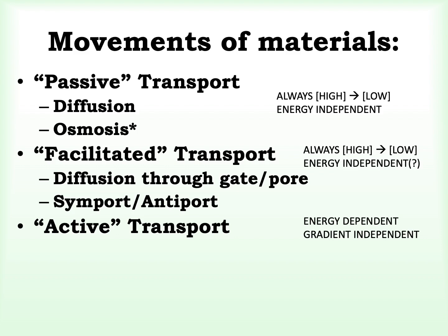The last type is active transportation, which is energy dependent and gradient independent. In active transport, movement can be from low to high or high to low concentration, but energy must be expended to move. This energy comes from the conversion of ATP into ADP and phosphate. That conversion releases energy which the cell uses to power transporters.